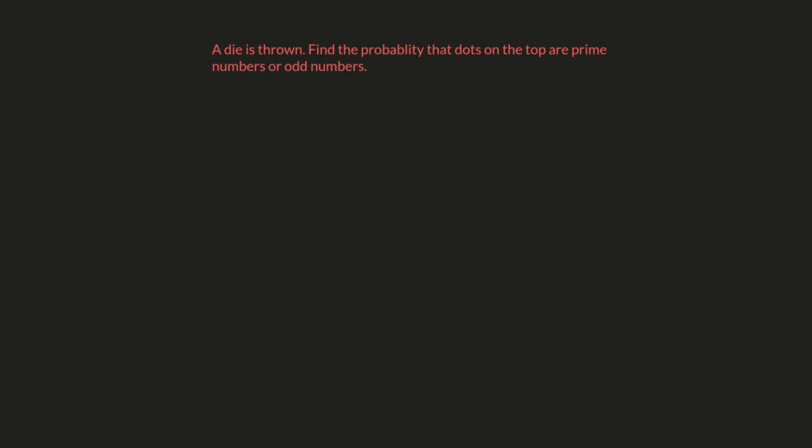In this video we're going to solve a very common practice question of probability. A die is thrown — find the probability that dots on the top are prime numbers or odd numbers.